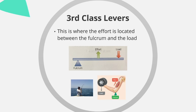Third class levers are where the effort is located between the fulcrum and the load. An everyday example is a fisherman with a rod resting against his stomach as the fulcrum, the effort is the fisherman lifting the rod, and the load is the weight of the fish at the far end pulling away. In human body terms, a brilliant example is the elbow: the fulcrum is the elbow joint, the effort is the biceps contracting to lift the radius, ulna, and a dumbbell during a bicep curl.